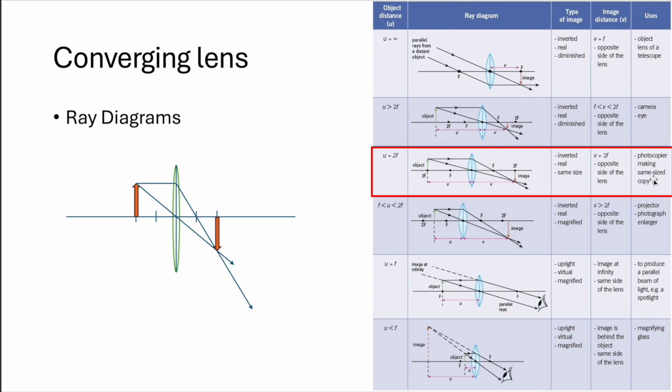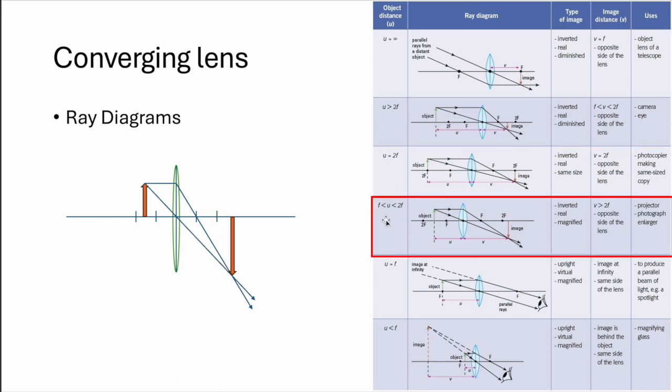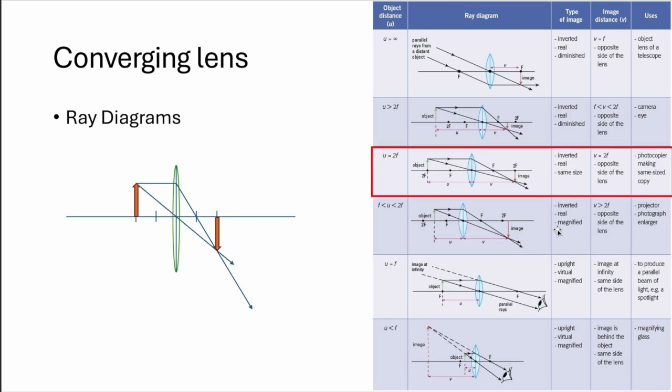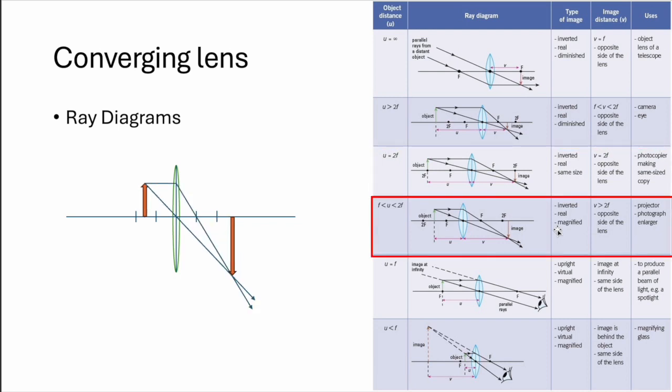And what happens if the object is between 1F and 2F, you get a larger one. So as the item comes towards the lens, the image is moving away from the lens. Noting that 2F equals 2F, that's like case 3. So item between 1F and 2F, straight one first, bent one next, and inverted real and magnified image. The image is now bigger than the object itself. So things like projector, the photograph enlarges.